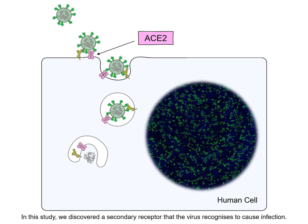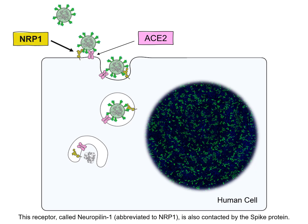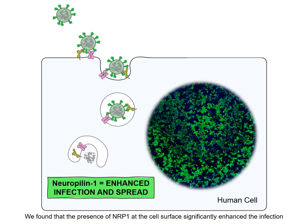In this study, we discovered a secondary receptor that the virus recognizes to cause infection. This receptor, called Neuropilin-1 or abbreviated to NRP1, is also contacted by the spike protein. We found that the presence of Neuropilin-1 at the cell surface significantly enhanced the infection and spread of the virus in human cells, as seen in this magnified image.